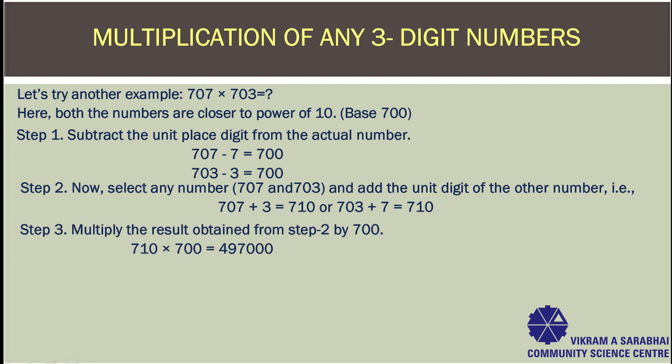Step 3: Multiply the result obtained from Step 2 by base 700. From Step 2, we get 710 multiplied by base 700, which gives 497000. Step 4: Multiply the unit digits of both numbers — 7 from 707 and 3 from 703. So 7 multiplied by 3, we get 21.